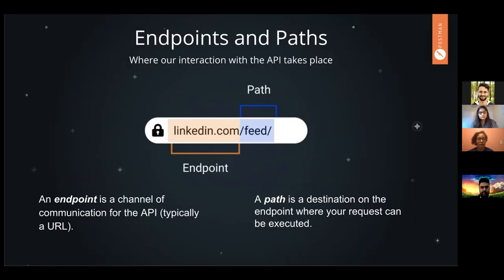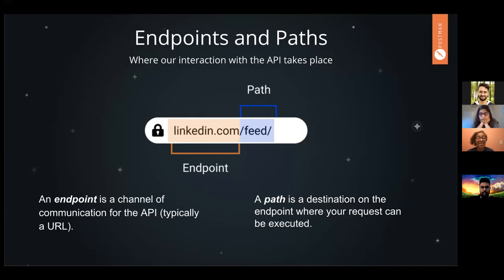An endpoint is really a channel of communication for the API — it's an address, typically a URL. If we're thinking about this as an address to a building, then the path would be the suite number. Say we're sending a piece of mail somewhere: your endpoint is going to be the overall address to an office building, but the path is going to be the suite number — the actual place where you want your message to get sent. So we want to go to suite 300, not suite 500, because suite 500 won't know what to do with this piece of mail.